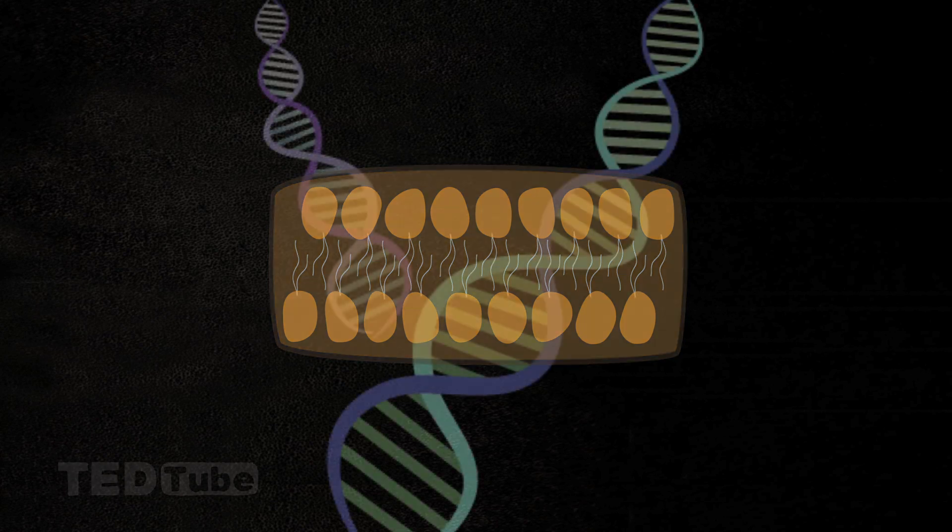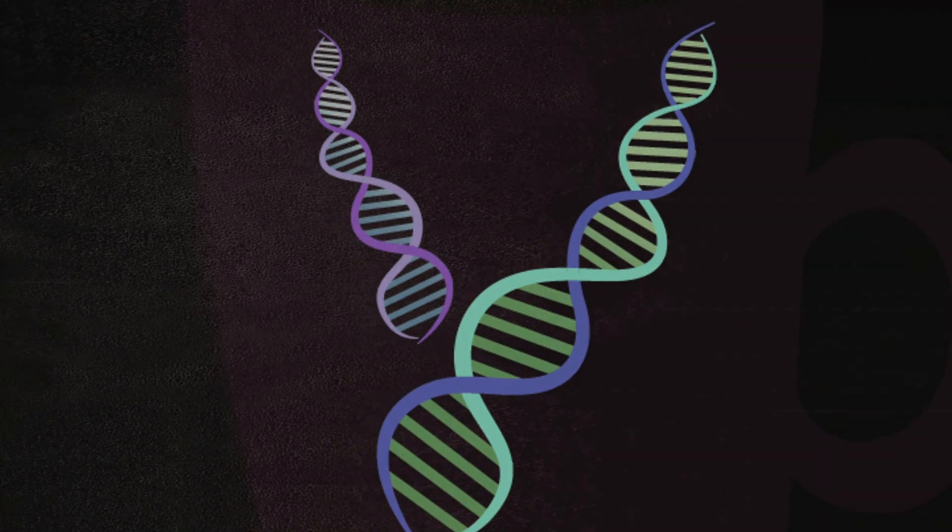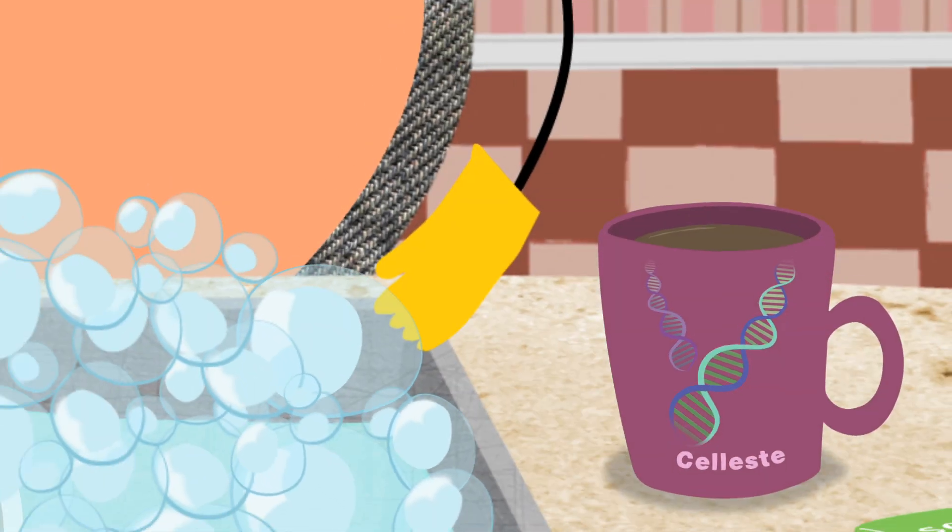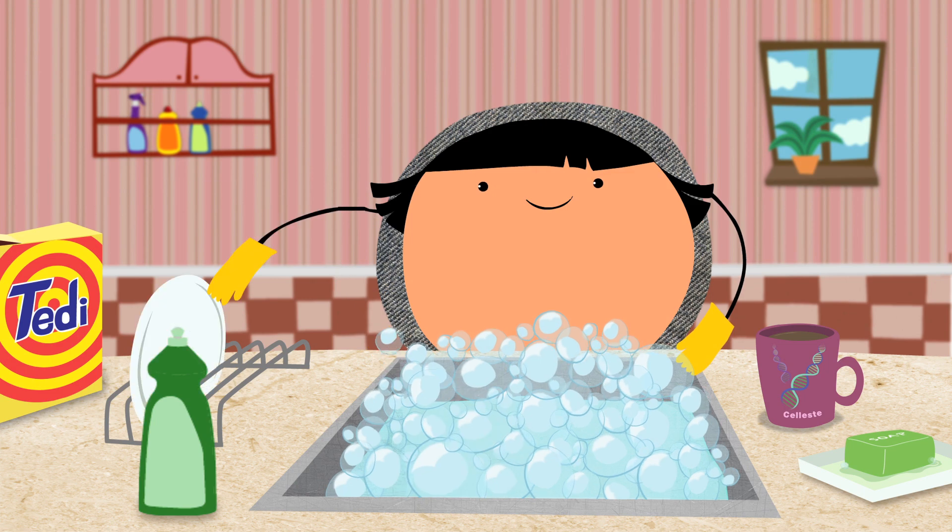So almost 30 years before the double helix structure of DNA was elucidated, a single experiment involving fancy versions of household materials enabled deep insight into the basic architecture of the cell.